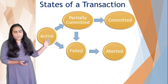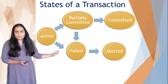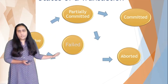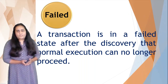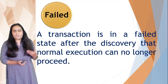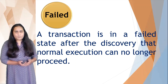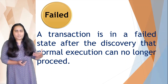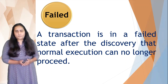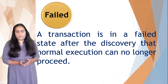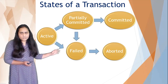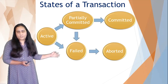A transaction from the Active state or from the Partially Committed state can also go to the Failed state. The Failed state is when a transaction has failed after it is discovered that it cannot proceed with its normal execution because of some type of error — either an error within the transaction itself or a system error. Once in the Failed state, the only option is to move to the Aborted state.